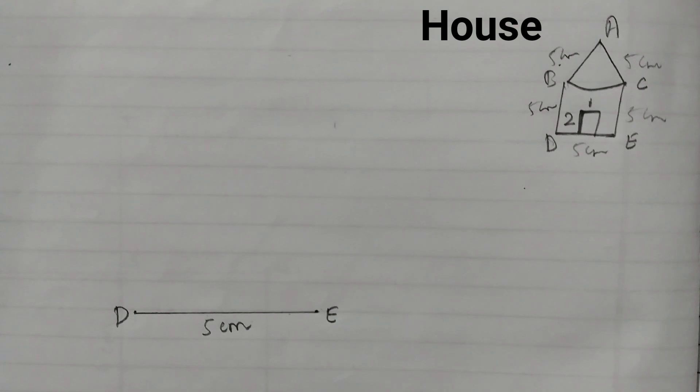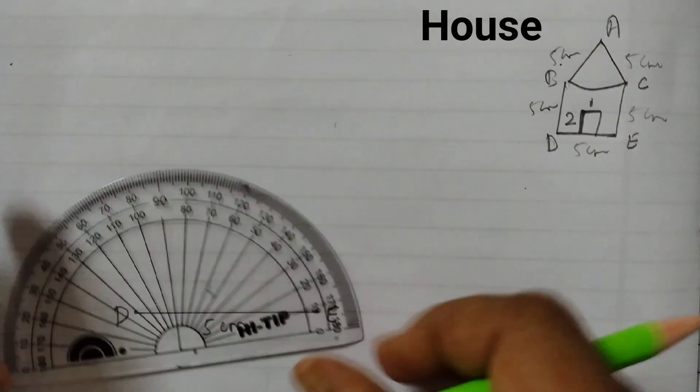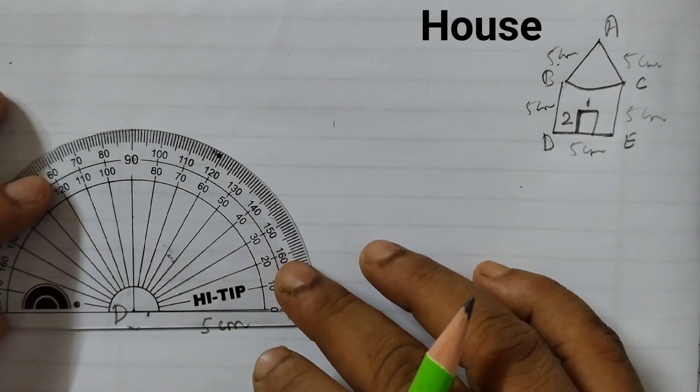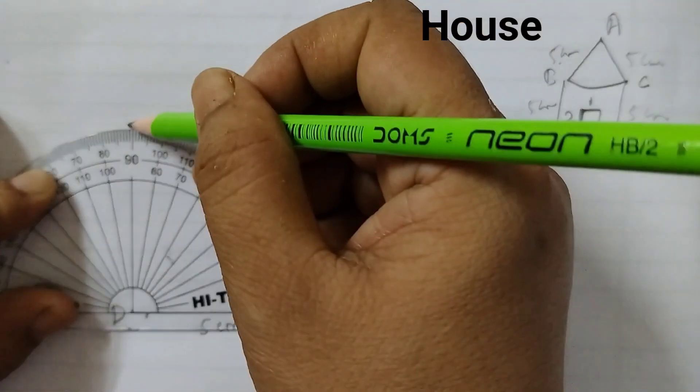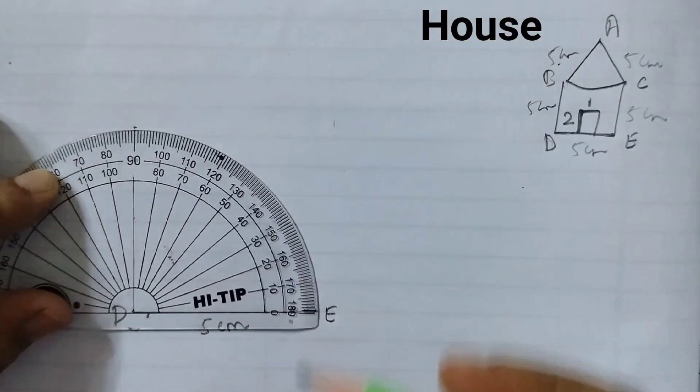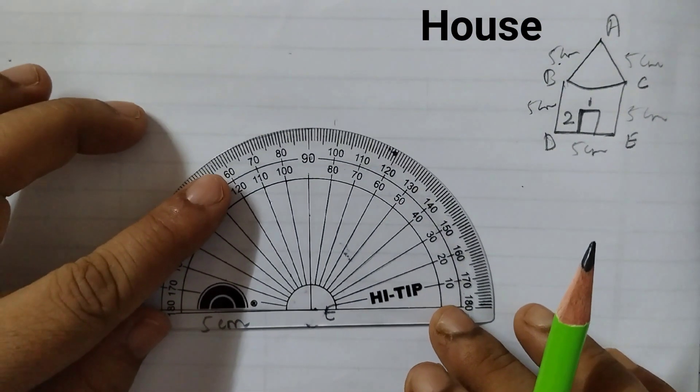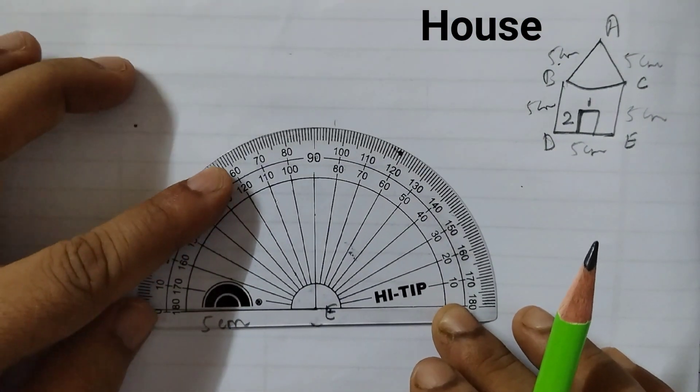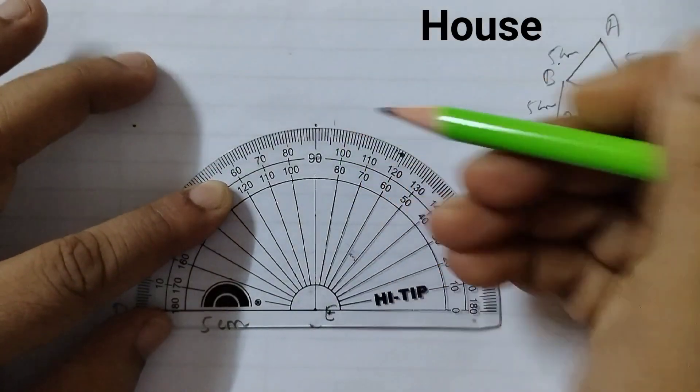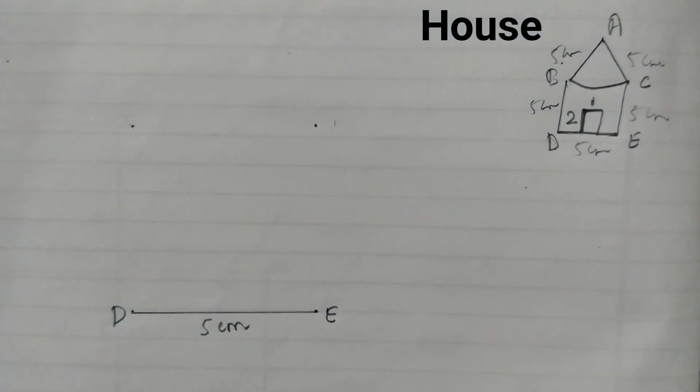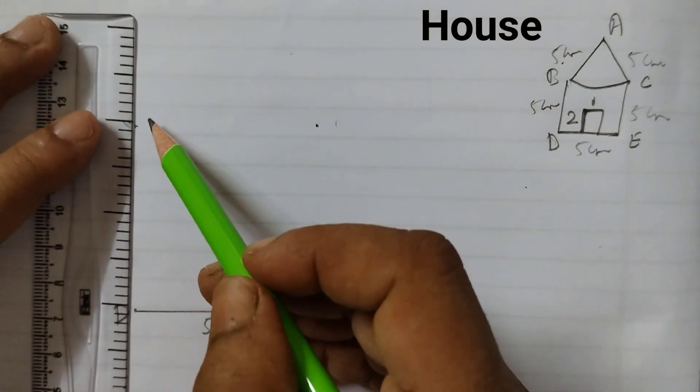Now take a protractor and draw perpendicular at D and E. So place the protractor like this. Mark a point at 90. Again place the protractor like this at point E. Mark a point at 90. Join these 2 points.